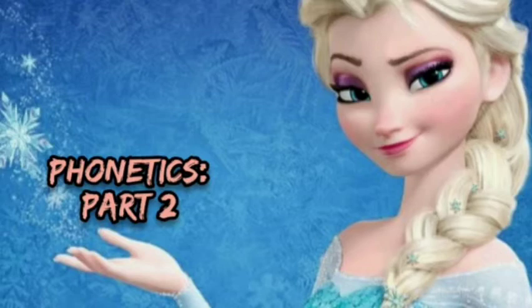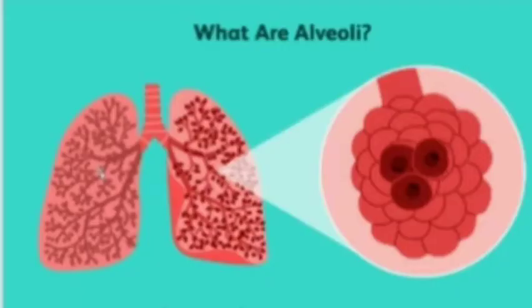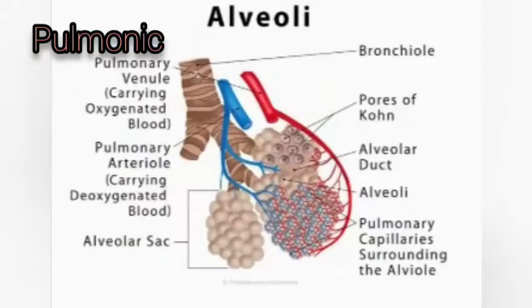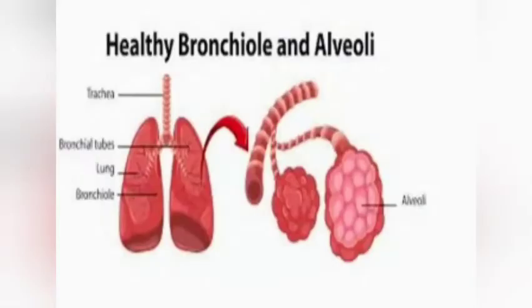The Pulmonic Airstream Mechanism deals with the respiratory system, which consists of the lungs, the muscles of the chest, and the windpipe or trachea. The lungs are spongy bodies made up of small sacs called alveoli. It is in these sacs that the blood is cleaned of its carbon dioxide and provided with fresh oxygen from the outer air.